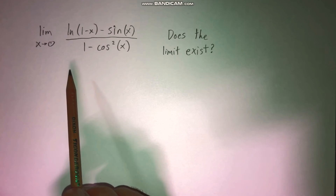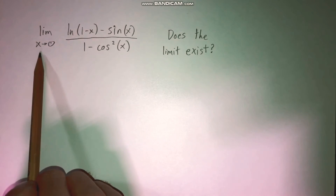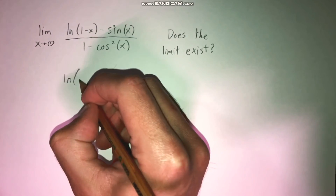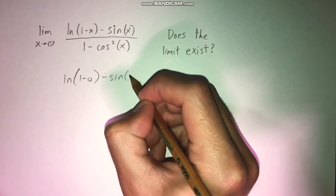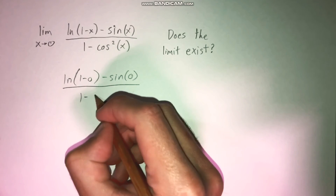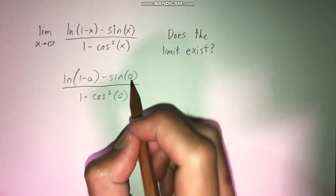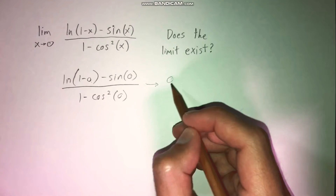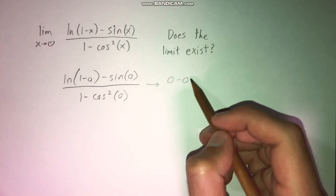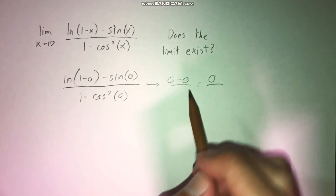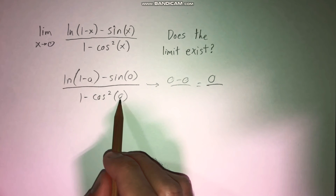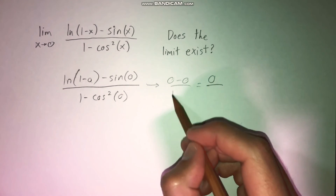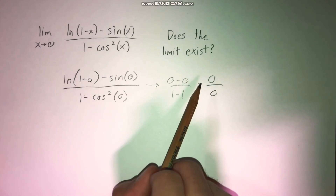What we can actually do to solve this limit — let's first think about what would happen if we just plug in zero for x into this function. We would basically end up getting natural log of one minus zero, minus sine of zero, over one minus cosine squared of zero. One minus zero is just one, and the natural log of one is zero. Sine of zero is also zero, so we get zero minus zero, which is just zero on our numerator. On our denominator, cosine of zero is one, and cosine squared of zero is one, so one minus one gives us zero. So we get the indeterminate form zero over zero.